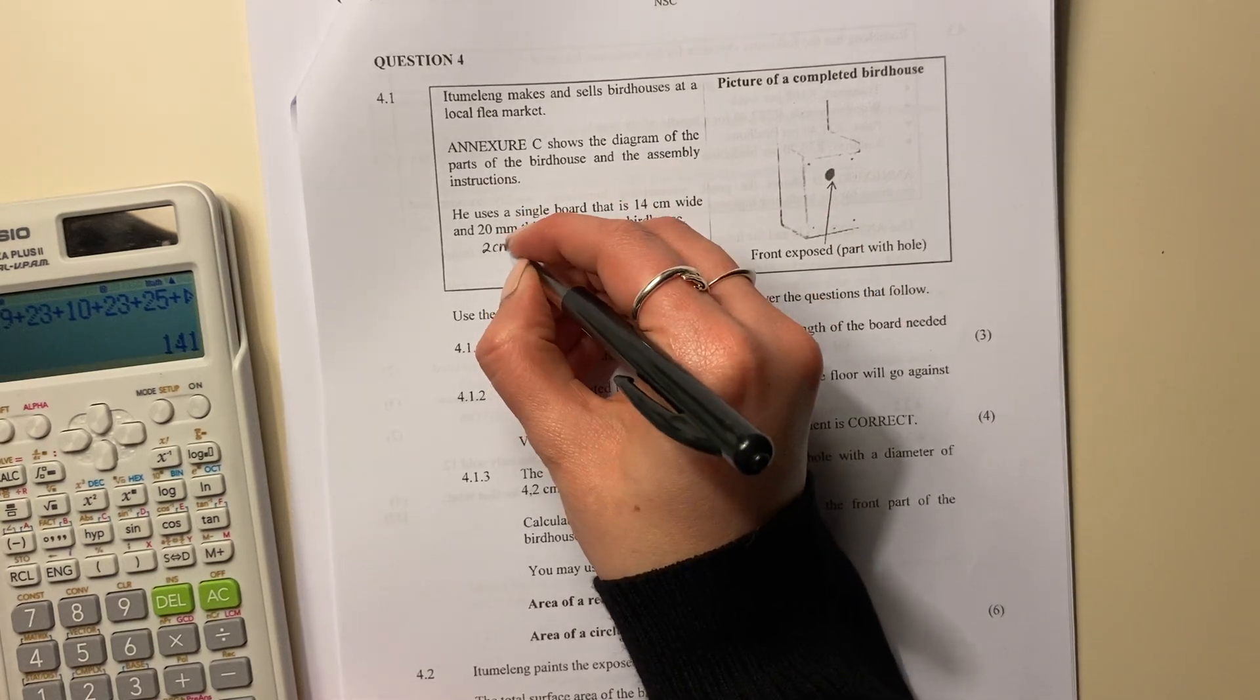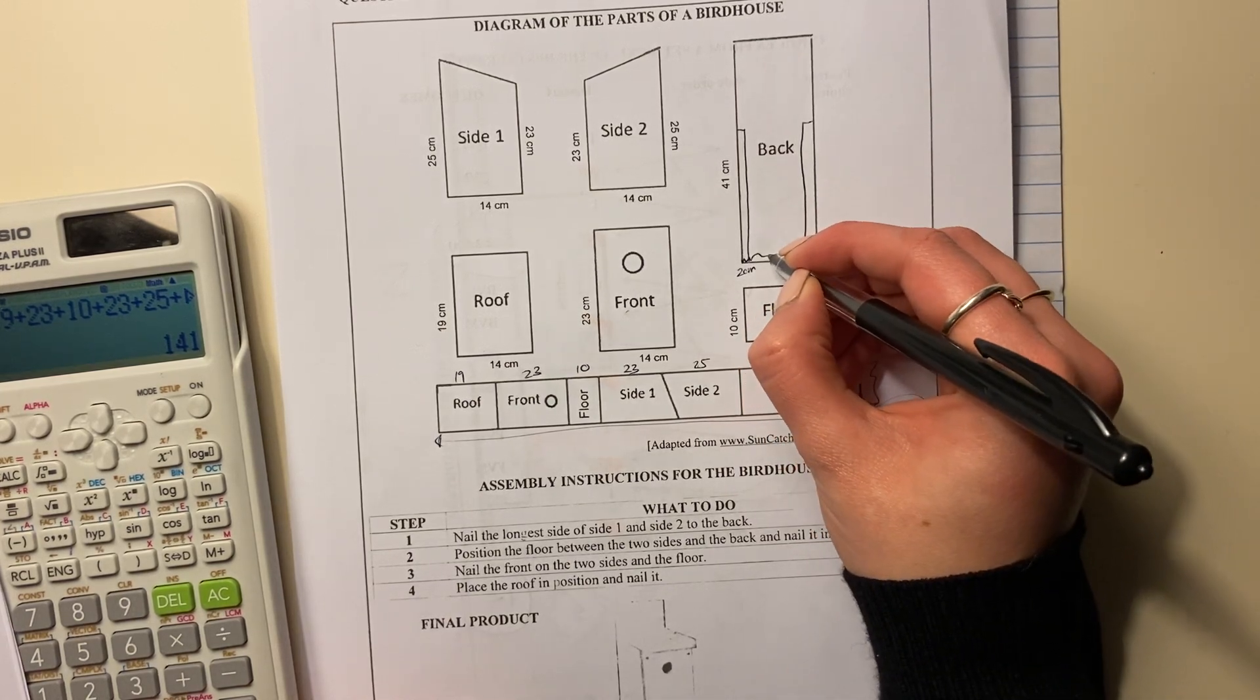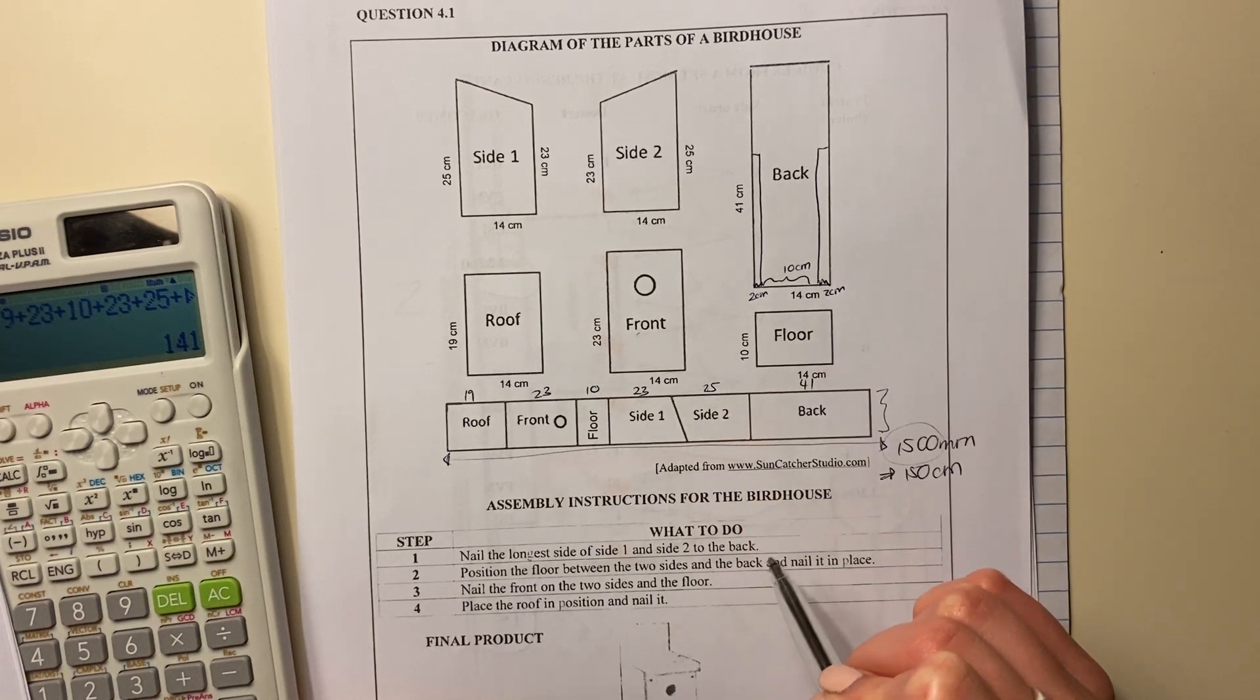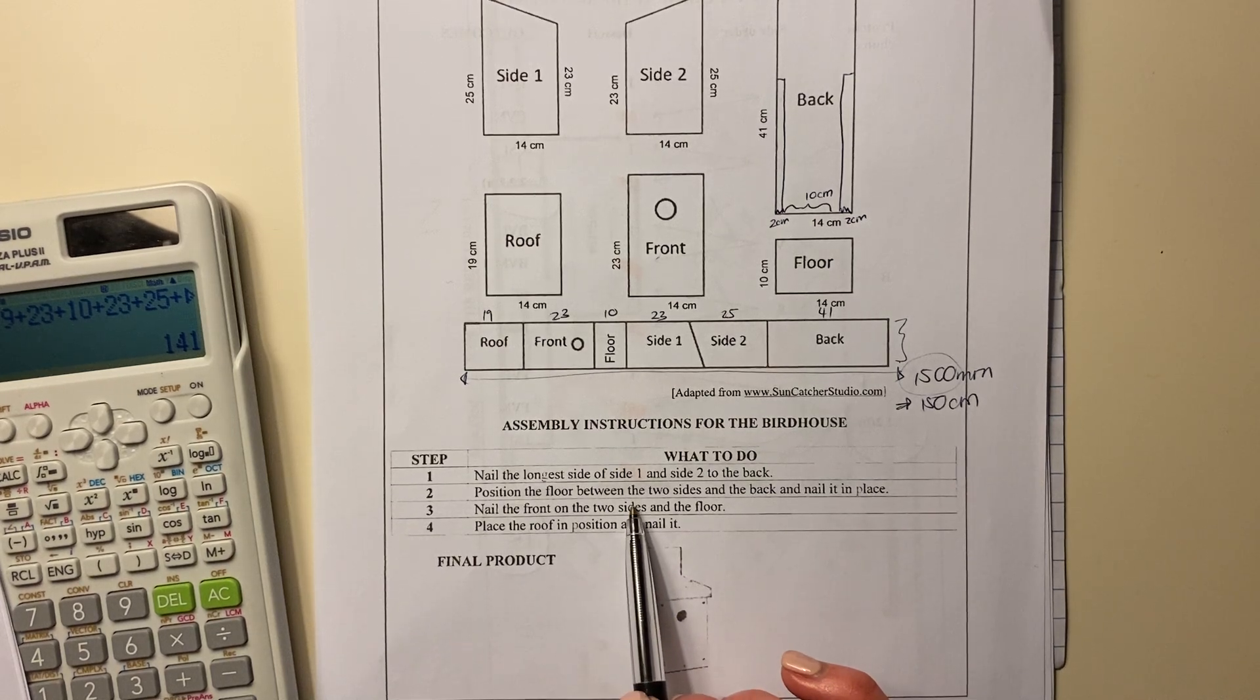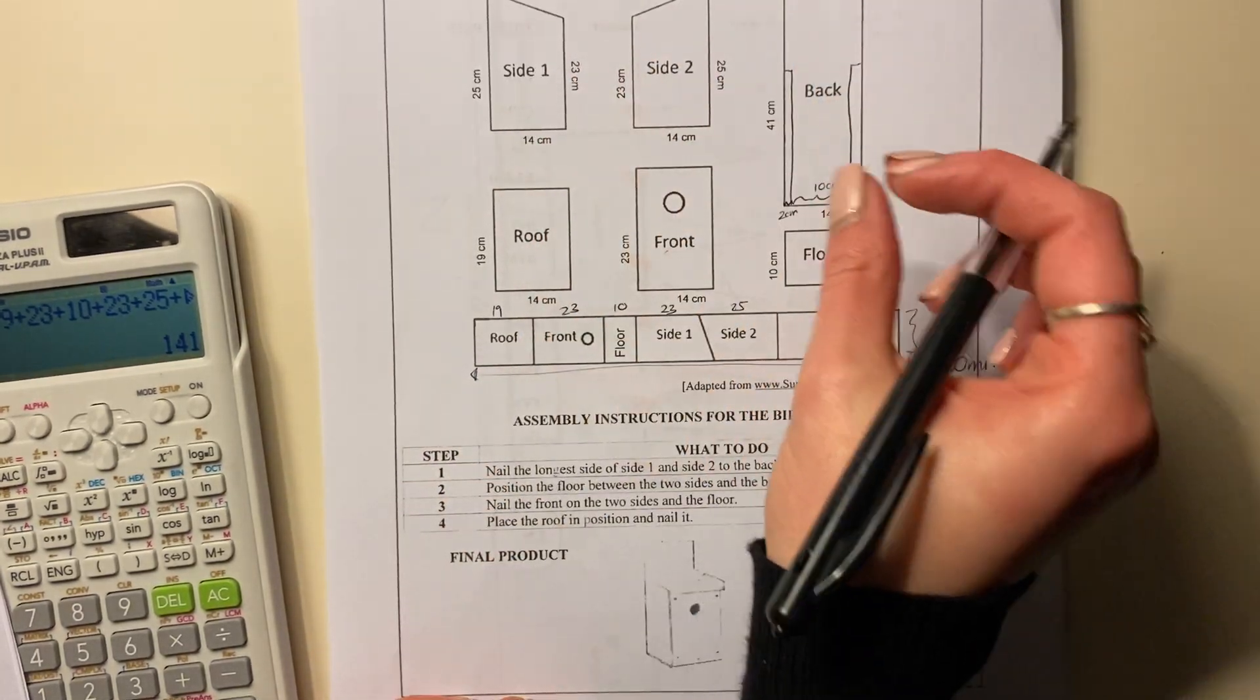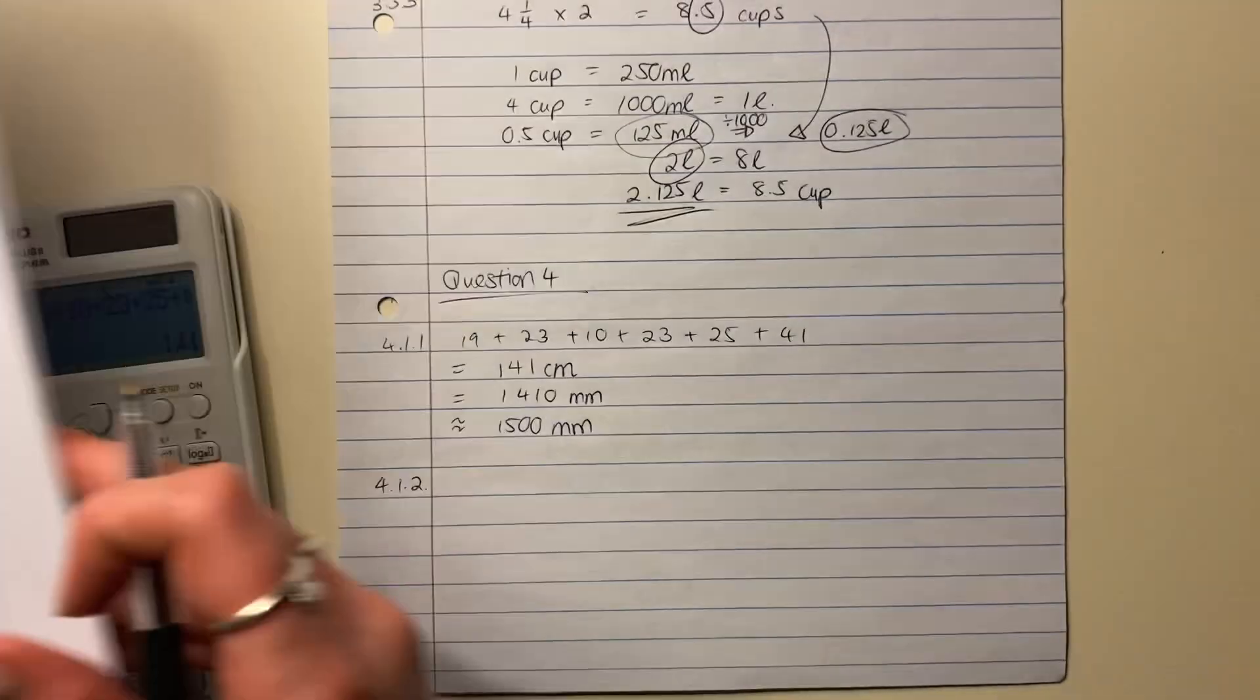20 millimeters. 20 millimeters is 2 centimeters. So that's going to be 2 centimeters there. That's going to be 2 centimeters there. So what is left over here? That is 10 centimeters. Because 14 minus 2 minus 2 gives me 10. So that's how that is positioned. So that was the first thing. Then it says, position the floor between the two sides and the back and nail it in place. So there is the floor. I'm going to take that 10 centimeter. I'm going to slot it in between those two sides, and that's done. So we know that that's correct. But obviously, we have to describe this and answer our question, but we've looked at it practically.